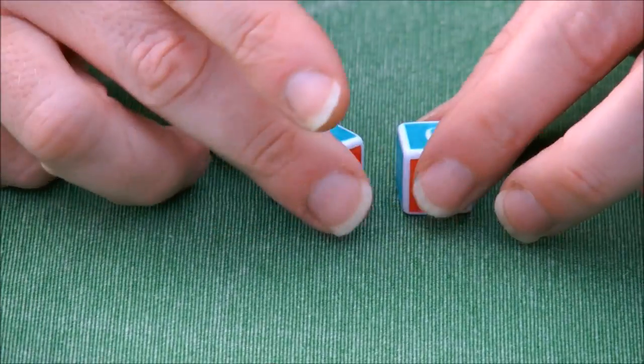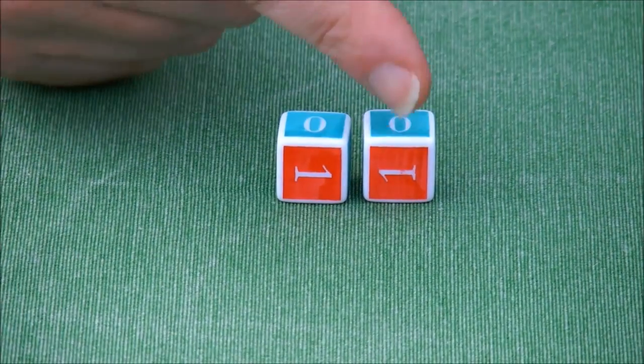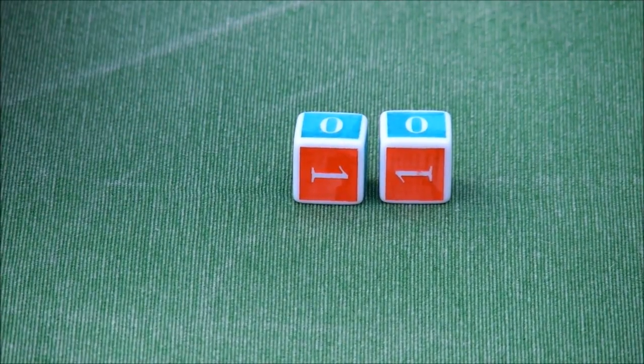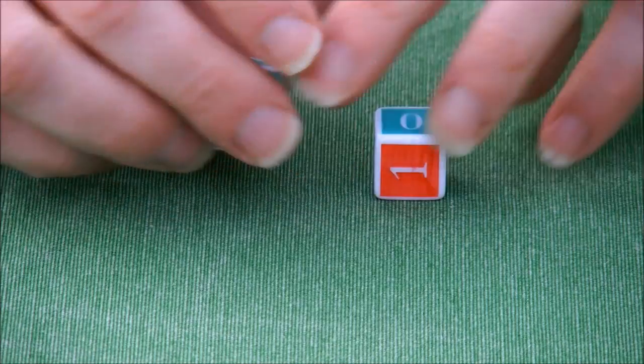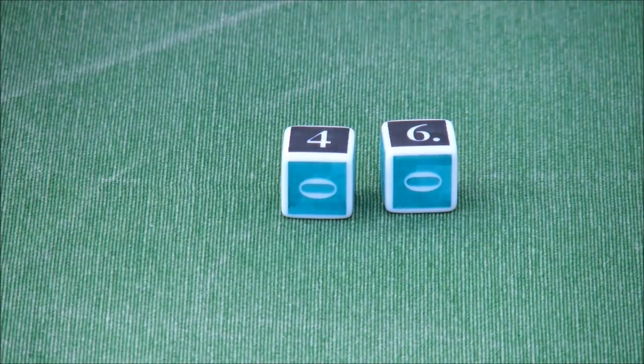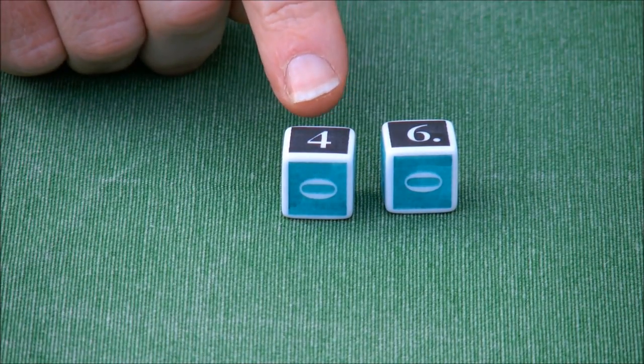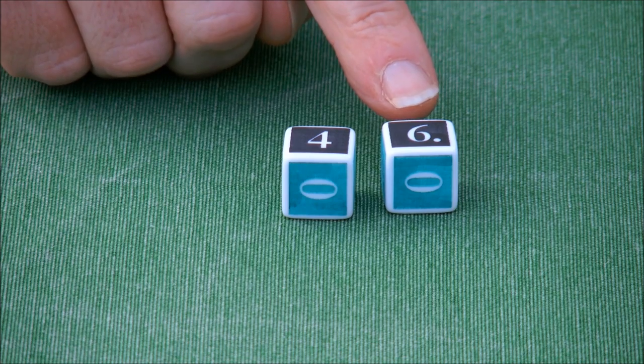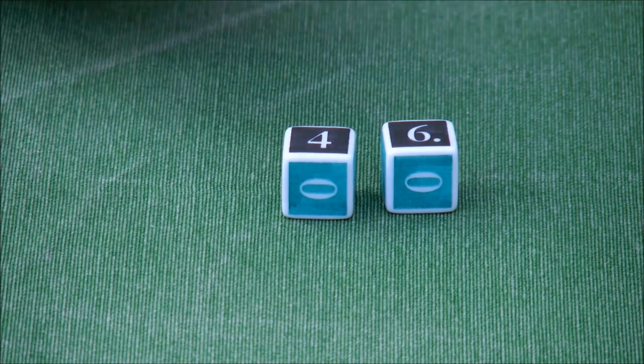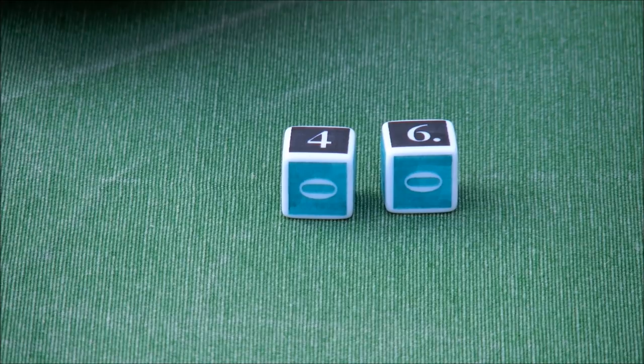When you throw the dice, the amount that you win is the multiplication of the numbers. So in this case you have one times zero. But for instance if you had entered one dollar and you would have thrown a four and a six, then the multiplication is 24, which means that you would have turned your one dollar into 24 dollars.